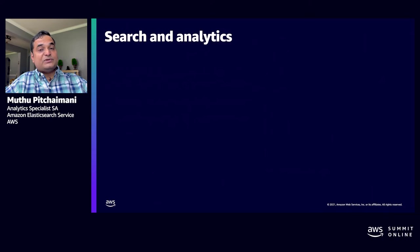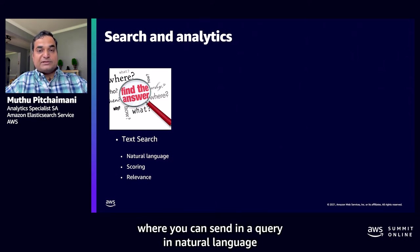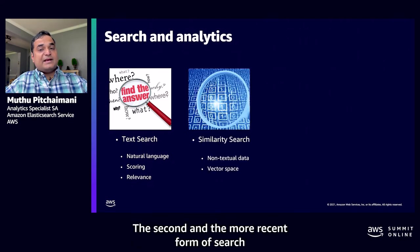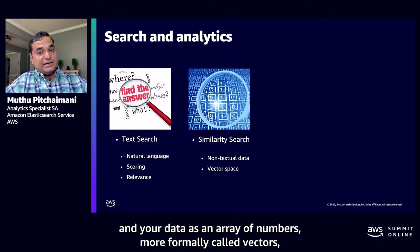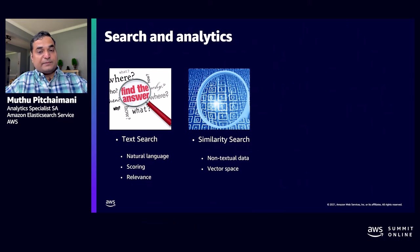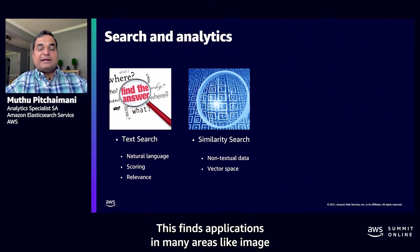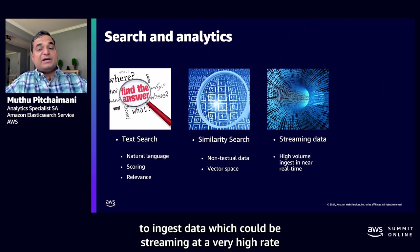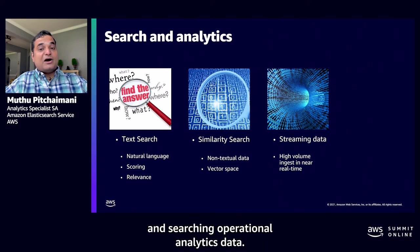So what can Elasticsearch do? First, it helps you search your data — this is text search, where you send a query in natural language and Elasticsearch searches and brings back relevant results. The second, more recent form is similarity search, which involves encoding queries and data as arrays of numbers called vectors, finding similarity beyond simple text matching. This enables searching data that is not strictly textual, finding applications in image searching and recommendations. Another important characteristic is its ability to ingest streaming data at a very high rate and make it available for search almost immediately.